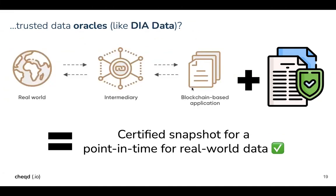Oracles are giving us data feeds about what is happening in the real world and bridging that gap to blockchain applications. How can you then create certified snapshots at a point in time of what happened in the real world? That can be tackled in multiple ways, but there are aspects of that which could be put into a credential that says it's a certified snapshot.